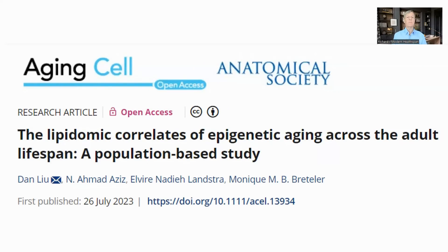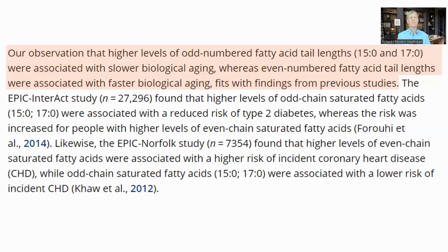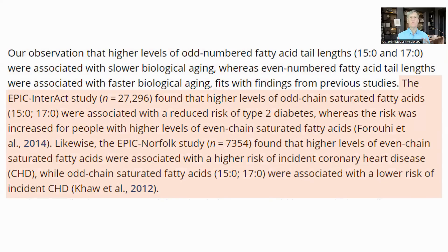A final paper looked at the correlation of the lipidome — the fats present in a person — and epigenetic age using the PhenoAge and GrimAge clocks. They found that odd-chain fatty acids, in particular C15 and C17, were associated with slower biological aging, whereas even-chain fatty acids were associated with faster biological aging. Odd-chain fatty acids were also associated with lower risk of type 2 diabetes and coronary heart disease. The three human studies were not related to Dr. Van Watson, and in each case the authors declared no conflict of interest.